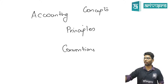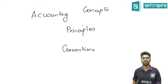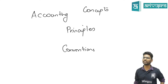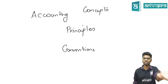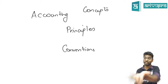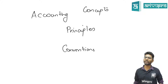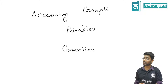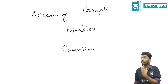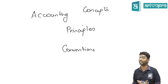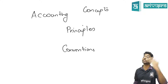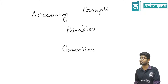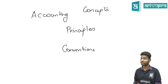You have to understand why we came up with concepts, principles, and conventions — they are meant for the users. The moment I say 'I have an asset,' you understand I own it because of something done in the past. We have certain notions. This is what accounting concepts are about — accounting concepts are basic assumptions on which financial statements are prepared. These assumptions belong to the users, and based on them we prepare financial statements so everyone interprets everything in the same manner.